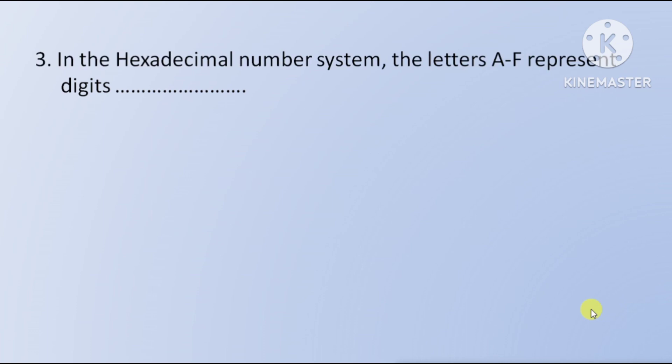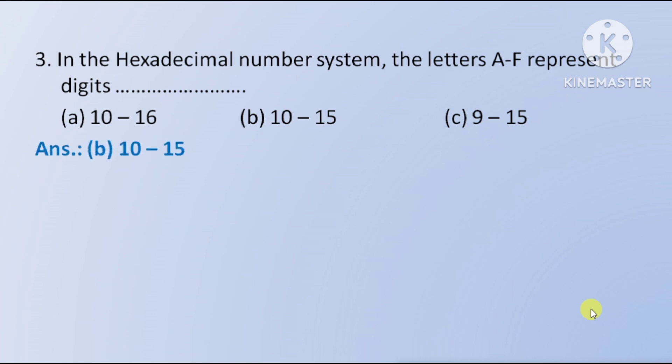Next question: in the hexadecimal number system the letters A to F represent which digits — option A 10 to 16, option B 10 to 15, option C 9 to 15. The right answer is option B, 10 to 15.